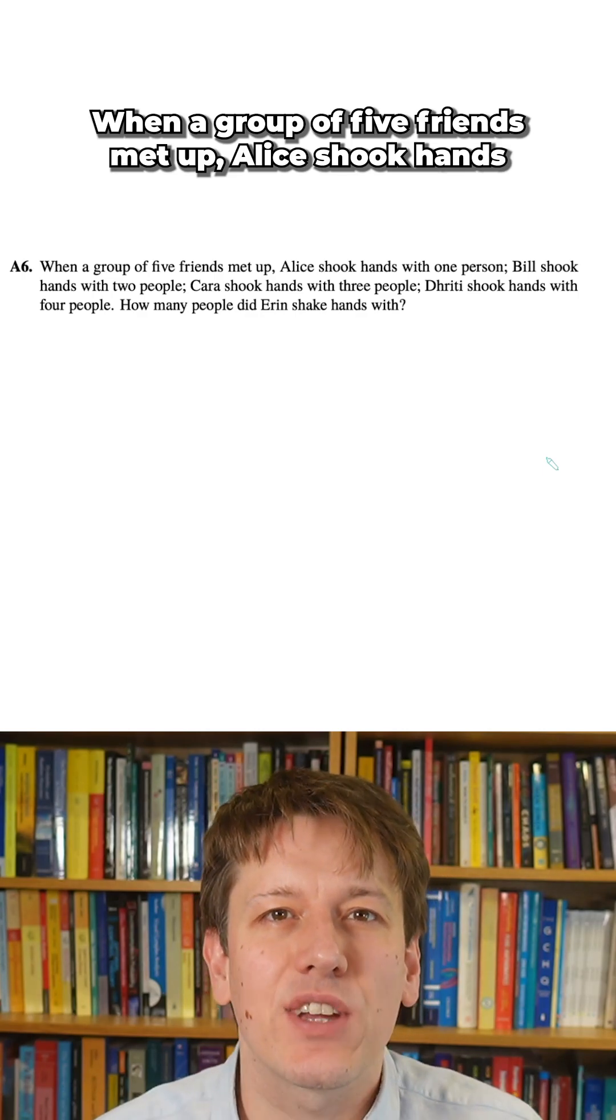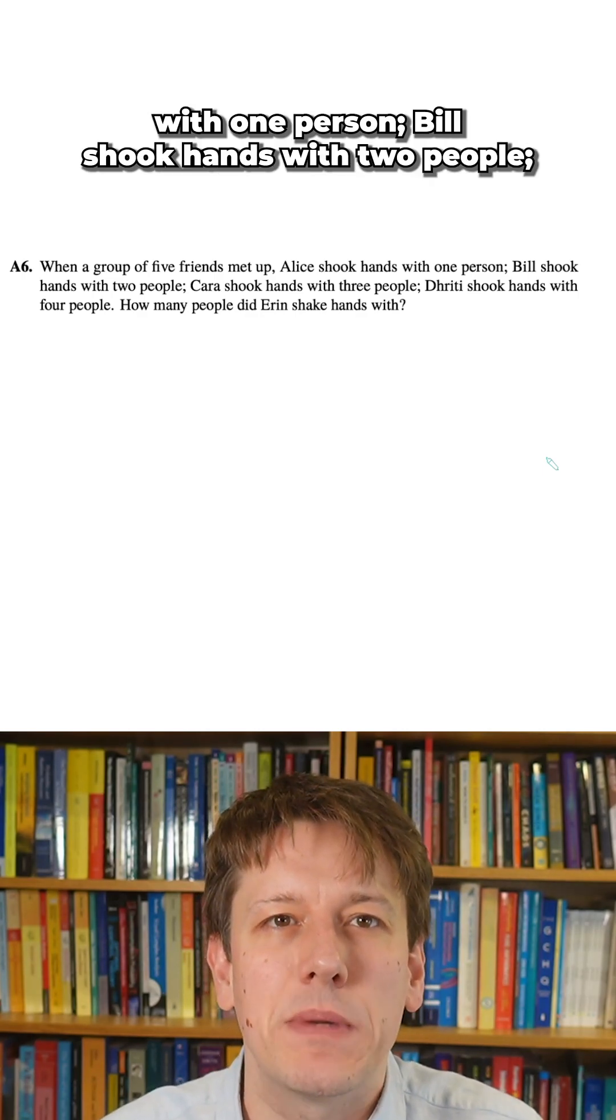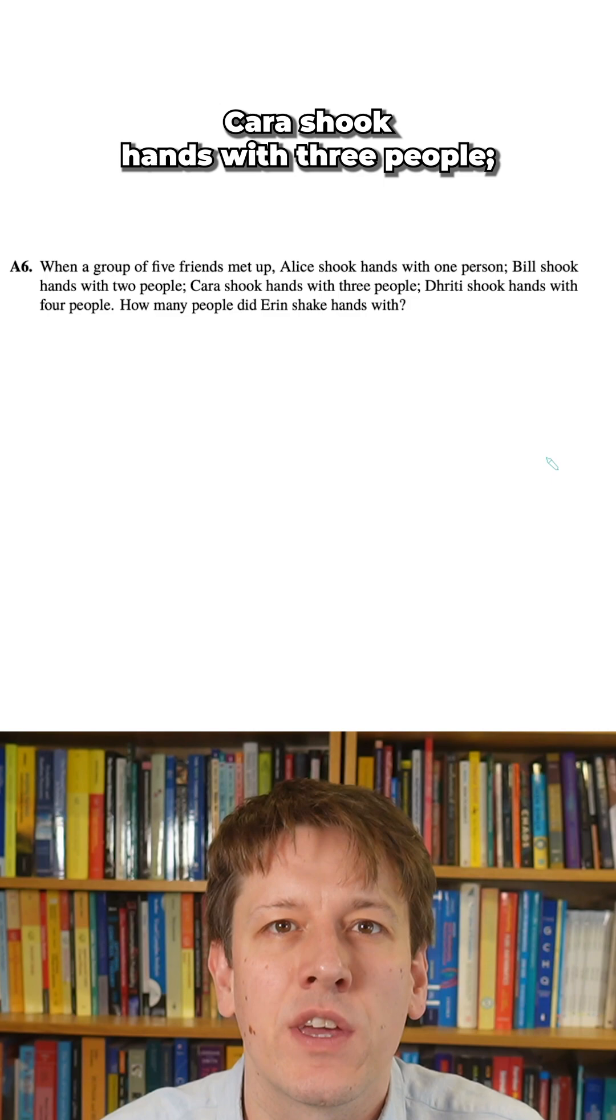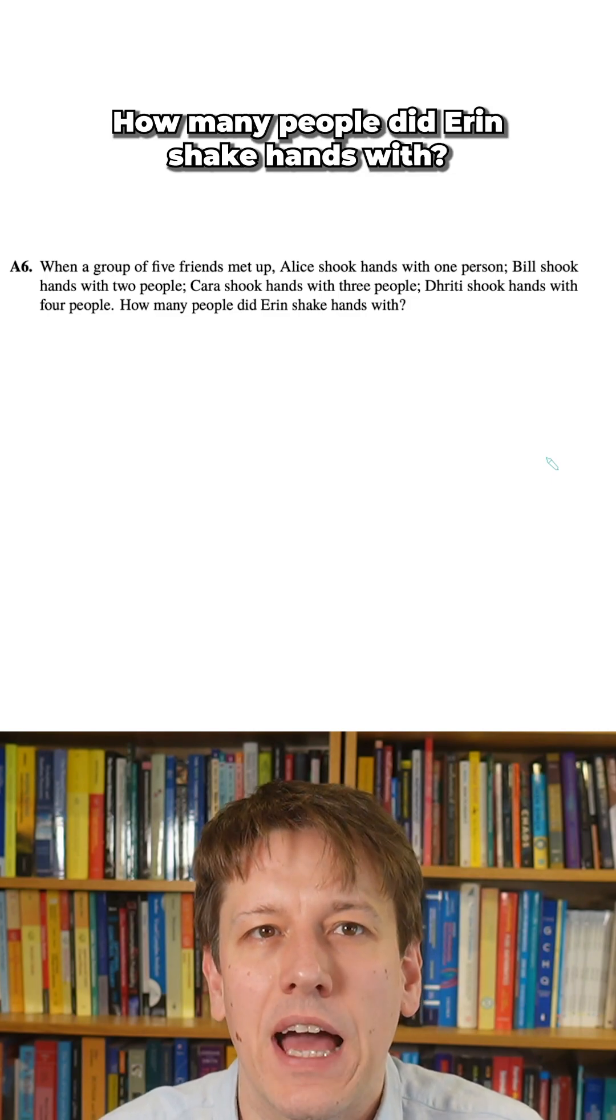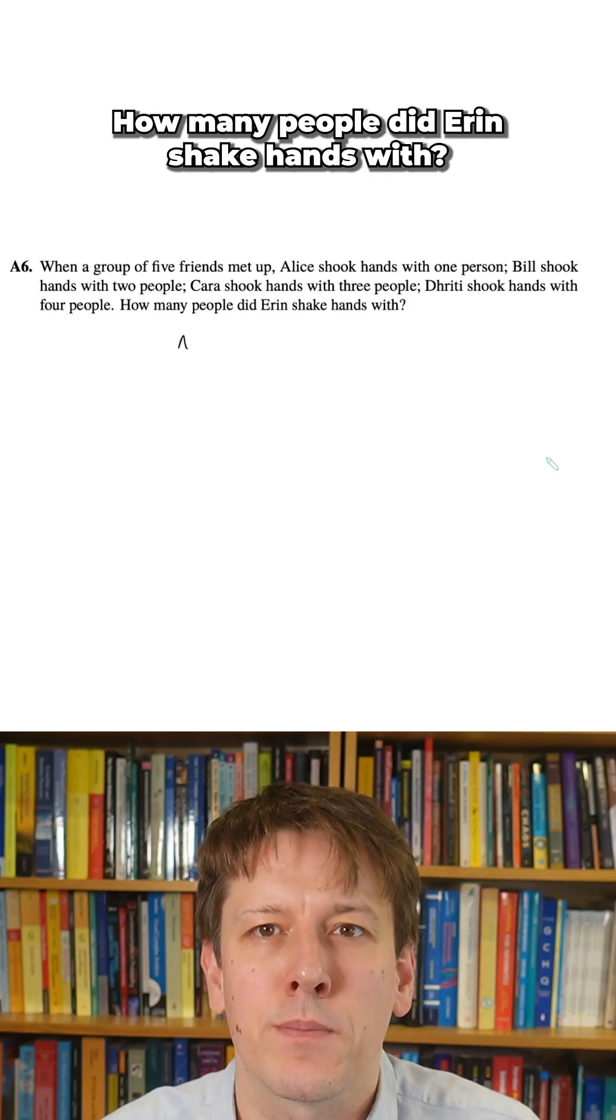When a group of five friends met up, Alice shook hands with one person, Bill shook hands with two people, Kara shook hands with three people, Dritti shook hands with four people. How many people did Erin shake hands with?